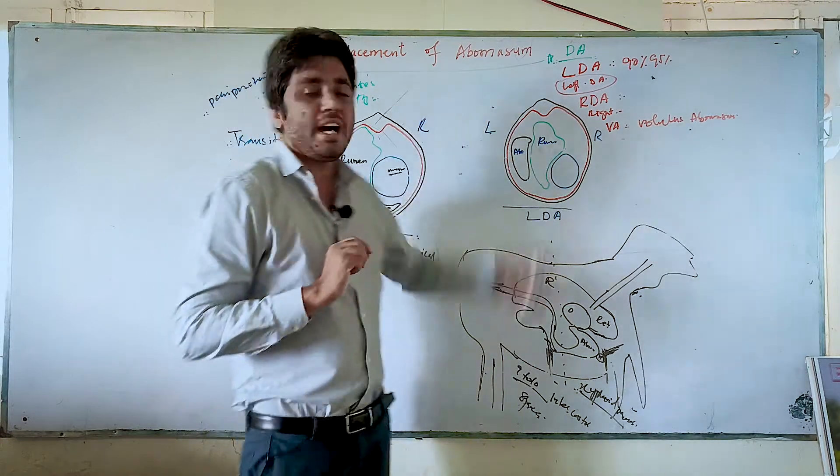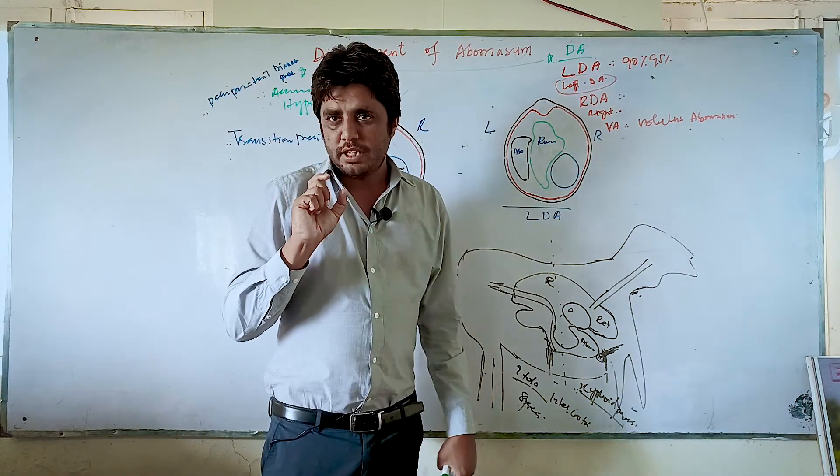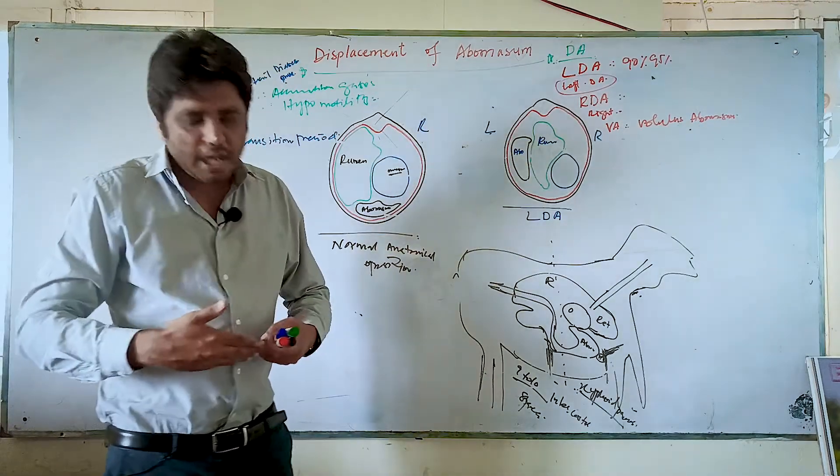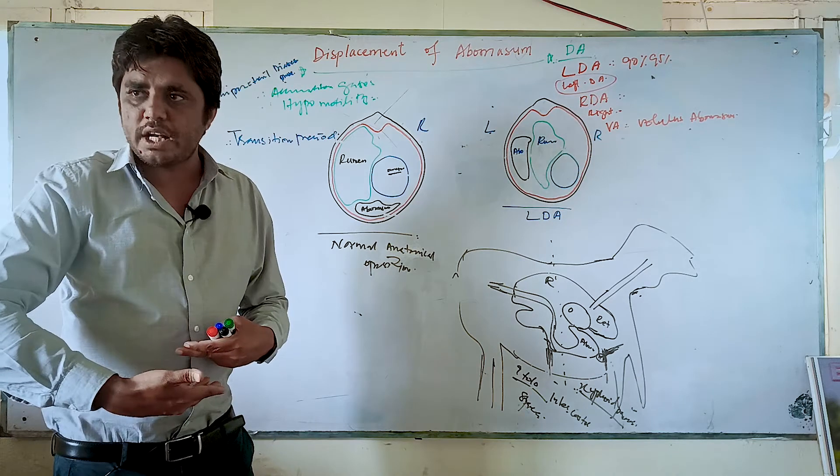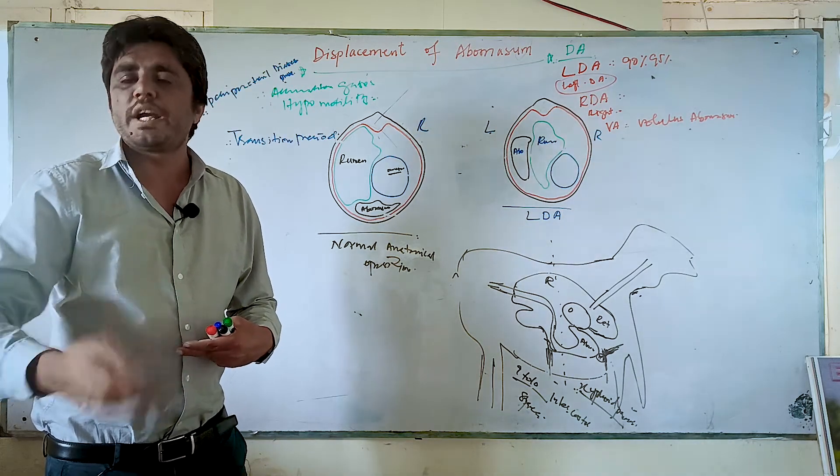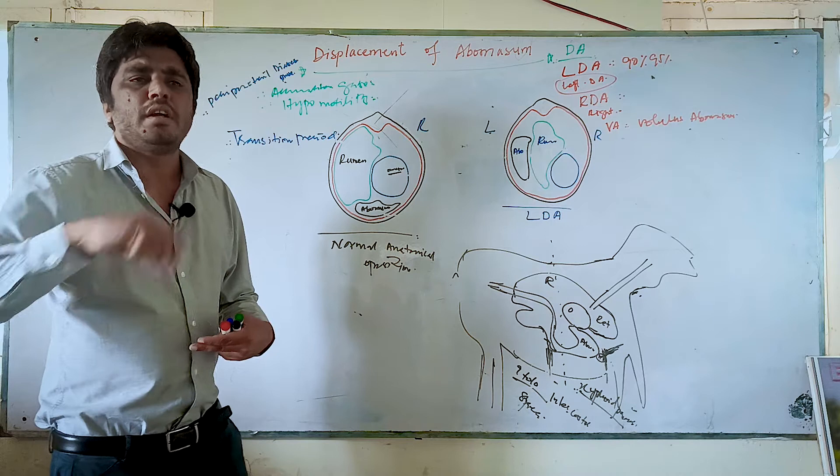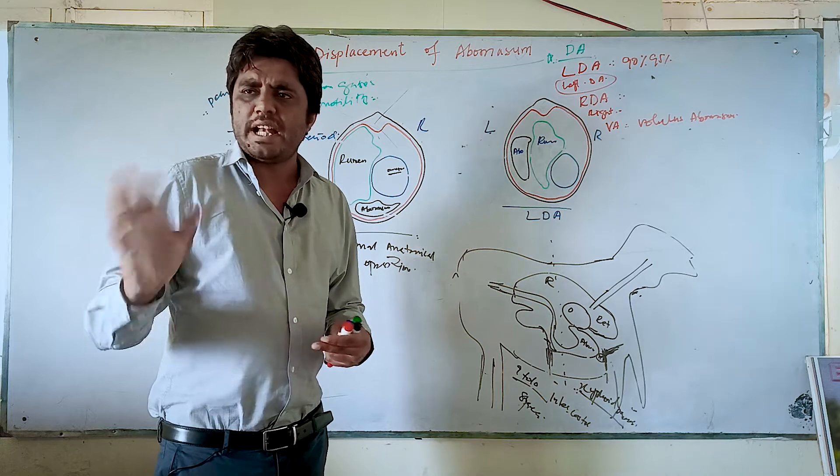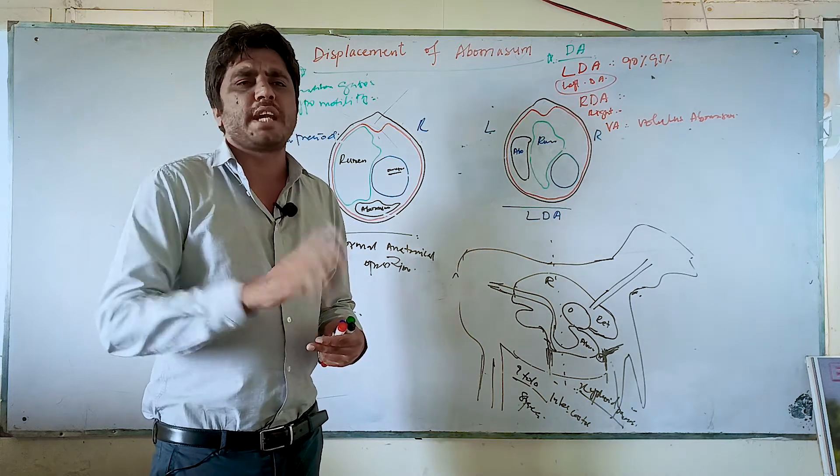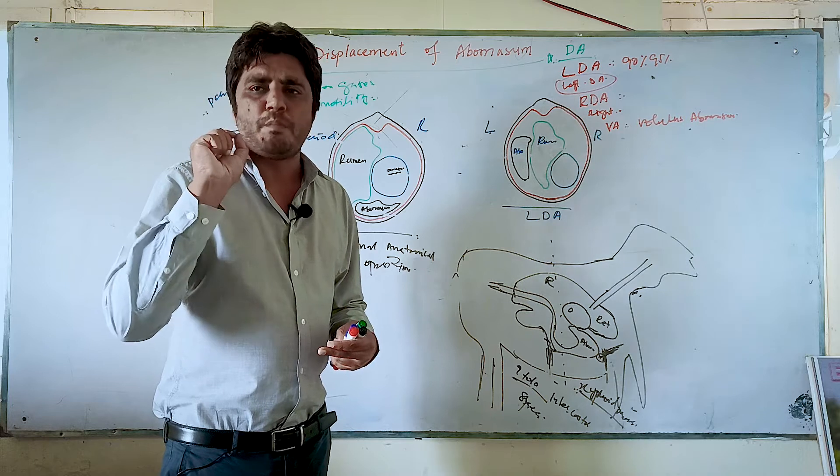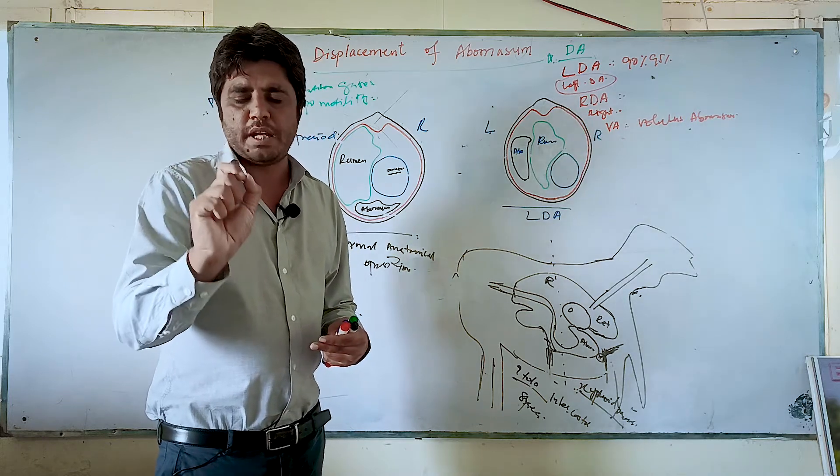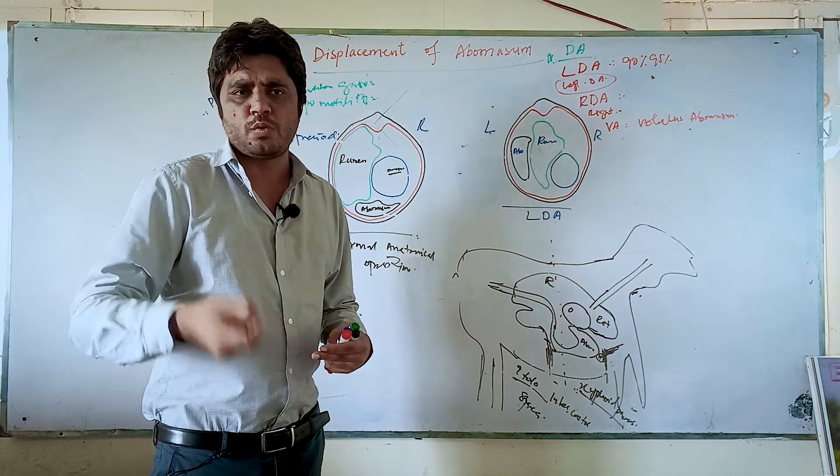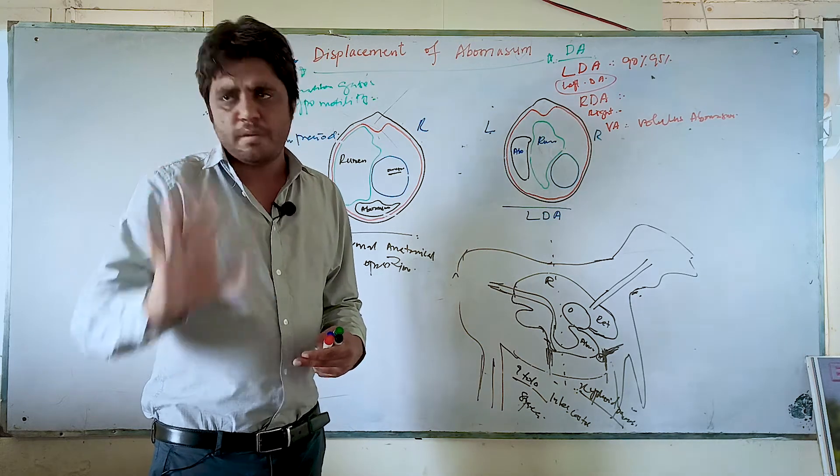For displacement of the abomasum, the number one factor is parturition. Because this disease may occur two weeks before parturition or after parturition, two weeks, maybe one week or one month after parturition. Most cases of displacement of abomasum occur one or two weeks before parturition or one to two weeks or one month after. This is important.